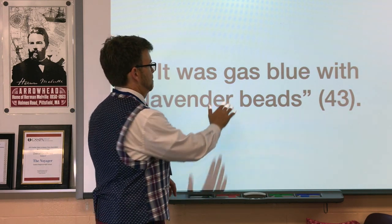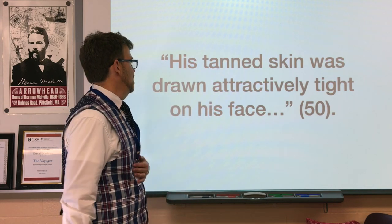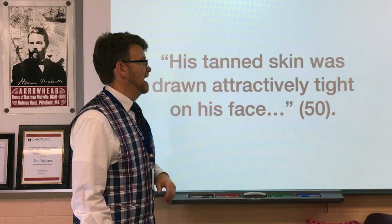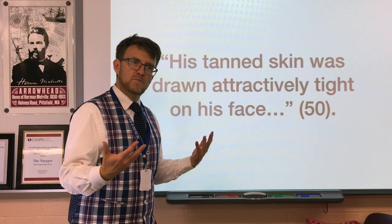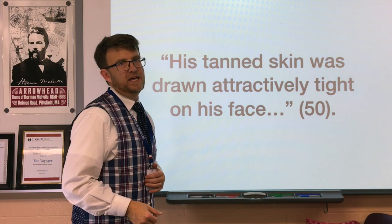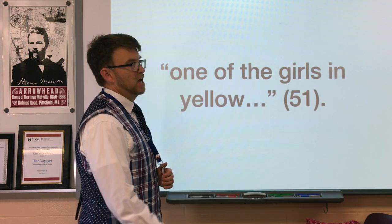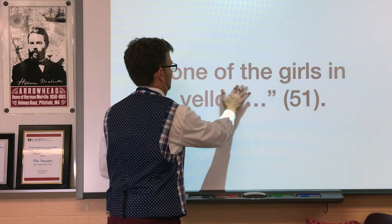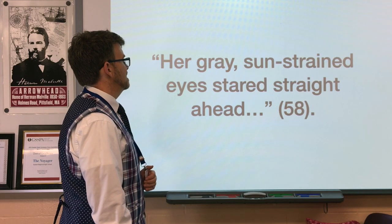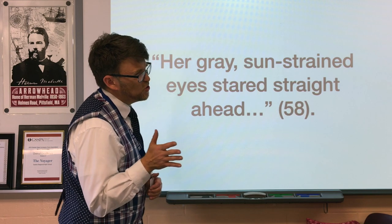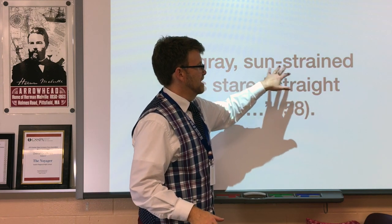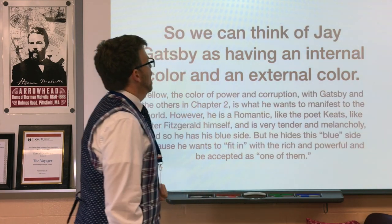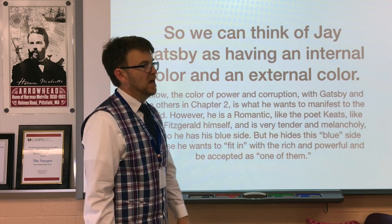Gatsby's tan skin was drawn attractively tight on his face — like Jordan, he is tan, again showing he's bewitched by yellow, performing the appearance of wealth like his yellow Rolls-Royce. The girls in yellow are identified by color more than by any other description. Then there's a mention of gray sun-strained eyes staring straight ahead — I think this is Jordan — again, sun-strained suggests the appearance of yellow, but it's straining the eyes. So we can think of Gatsby as having an internal color and an external color.